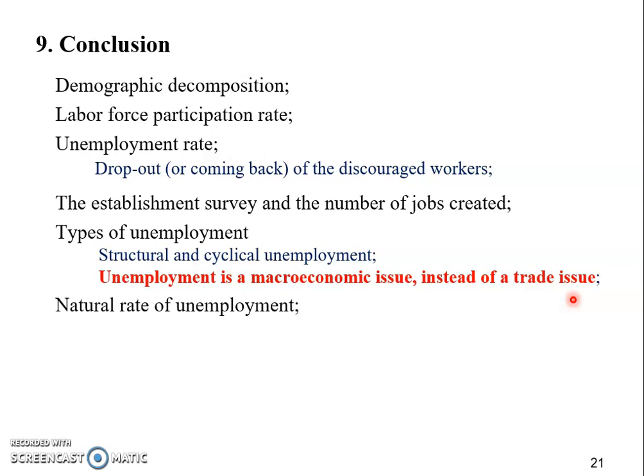The natural rate of unemployment and the potential GDP are what we just discussed, completing our coverage of the second indicator of macroeconomic performance. In the next chapter, we will start talking about the third and final macroeconomic indicator, which is the cost of living.